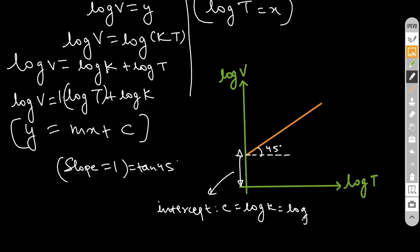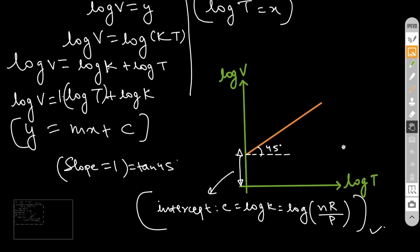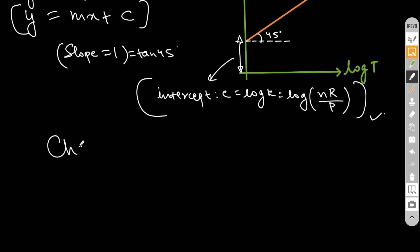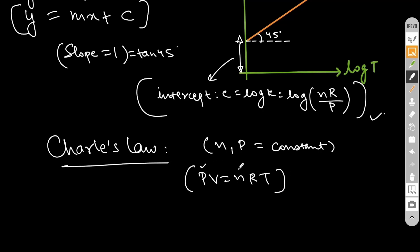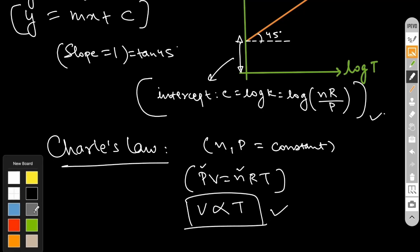To discuss Charles law in a nutshell: the intercept C = log K = log(nR/P). From PV = nRT with n and P constant, V = RT, so V is directly proportional to T. That is the core learning from Charles law.